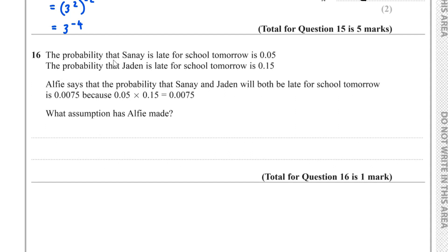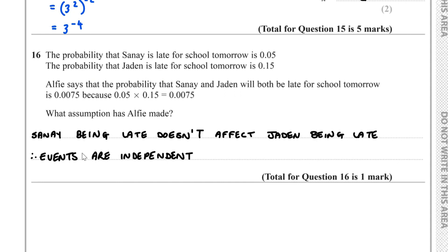Question 16. The probability that Sunny is late is 0.05 and the probability that Jayden is late is 0.15. Alfie multiplies these to get 0.0075. The fact that these probabilities are being multiplied suggests the events are independent — in other words, Sunny being late does not affect Jayden being late, so the events are independent.